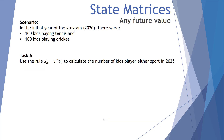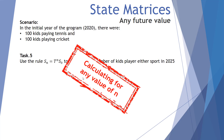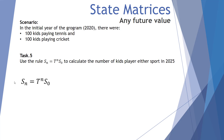Task five: use the rule Sₙ = T^n × S₀ to calculate the number of kids playing either sport in 2025. Instead of working out the next step in the sequence, we're jumping years ahead to calculate for any value of n. Using this equation, we can work out after five, ten, or twenty transitions. We're trying to work out the number of kids playing in 2025 compared to 2020.